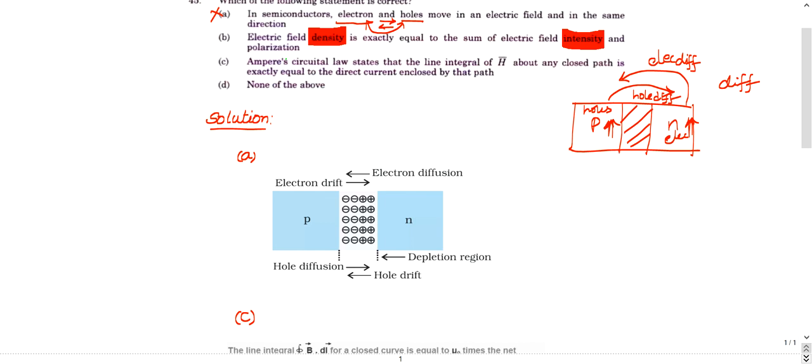Then exactly reverse of this will take place for drift current. You can look at this first figure. You can see hole diffusion is taking place from P to N, whereas electron diffusion is taking place from N to P. The reverse operation takes place. Electron drift will take place from P to N. It is a reverse operation. And hole drift will take place from N to P.